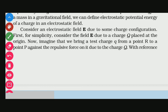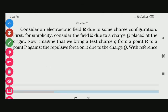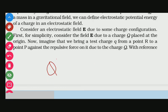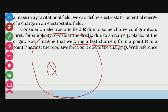For simplicity, consider a field due to a charge Q placed at the origin. Now imagine that we bring a test charge small q from a point R to a point P. The repulsive force acts on it due to charge Q, and this field exists between point R and point P.